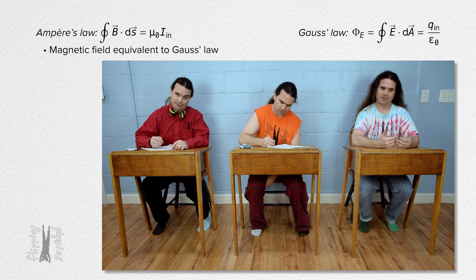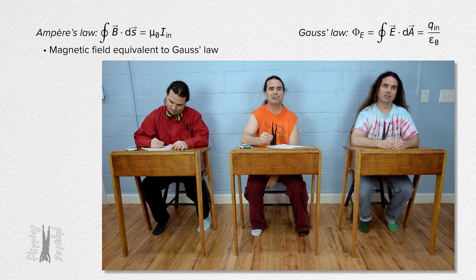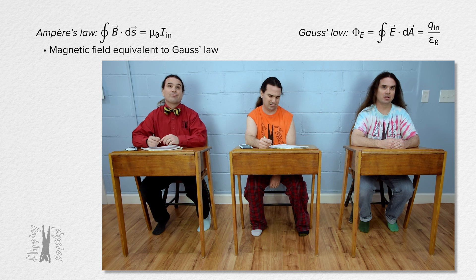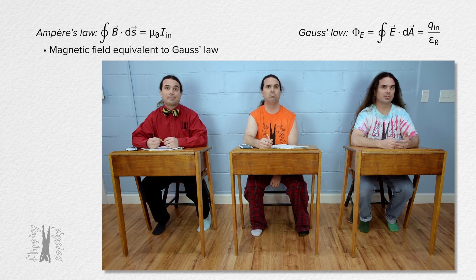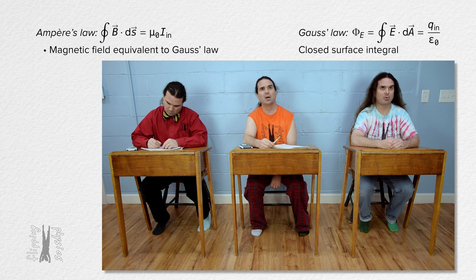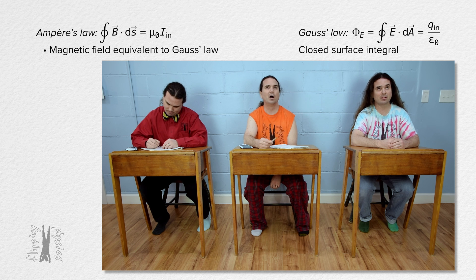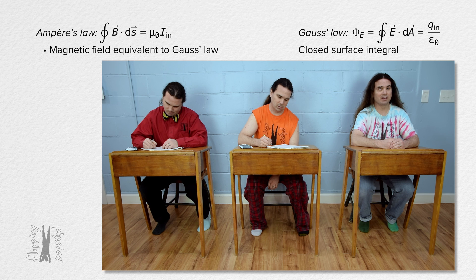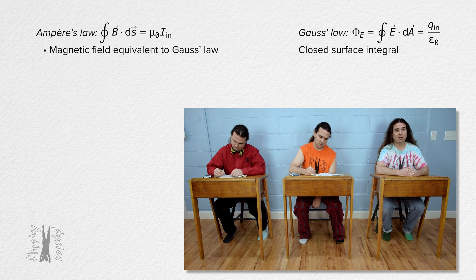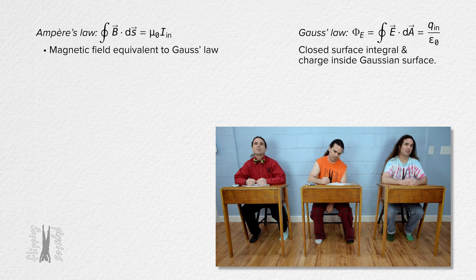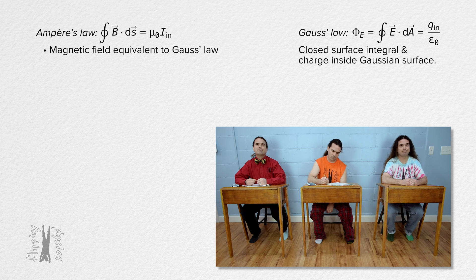Gauss's Law, which I love, states that the electric flux through an imaginary closed Gaussian surface equals the closed surface integral of the dot product of the electric field through that closed Gaussian surface and the infinitesimally small area vector dA, and it also equals the electric charge inside the Gaussian surface divided by the electric permittivity of free space. Well done, Bo.